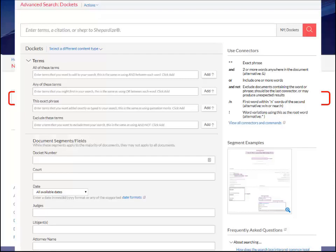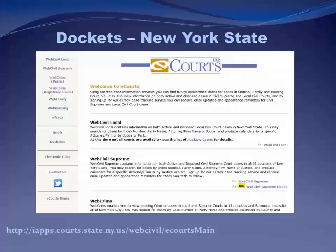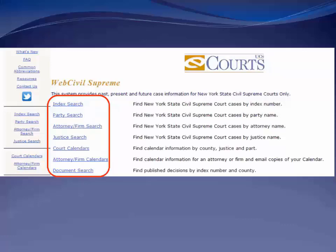What about free resources for dockets? You can access dockets filed with the New York State Courts from the newyorkcourts.gov website. From the landing page you first need to select the appropriate court to search — here I'll select 'Web Civil Supreme,' click on that link, and it brings up a search page. You need to decide how you want to search: by index number — which is what New York courts use instead of docket number — party name, attorney, or judge. There's no keyword search functionality at all, so you really have to know about the case and have some information before you can successfully use this website.